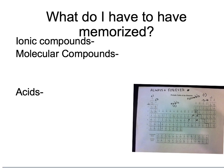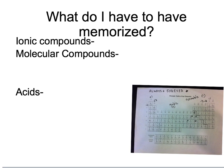For molecular compounds, those are where we use prefixes, so you have to have those in your head as well. You're supposed to know one through six: one is mono, two is di, three is tri, four is tetra.